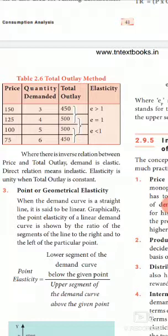From the table: in the first and second case, EP is greater than 1. In the second and third case, EP is equal to 1. In the third and fourth case, EP is less than 1. When EP is greater than 1, demand is relatively elastic, and there is an inverse relationship between price and total outlay.